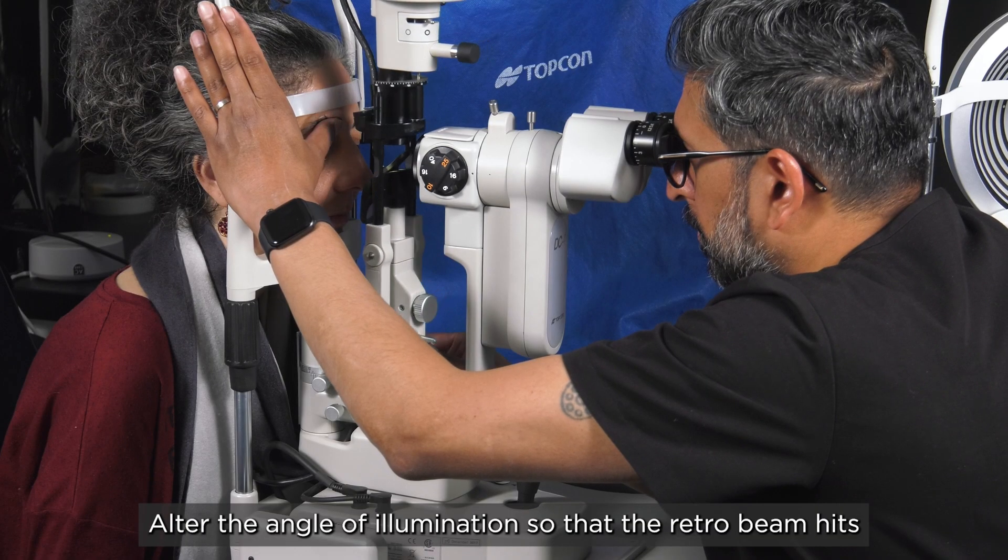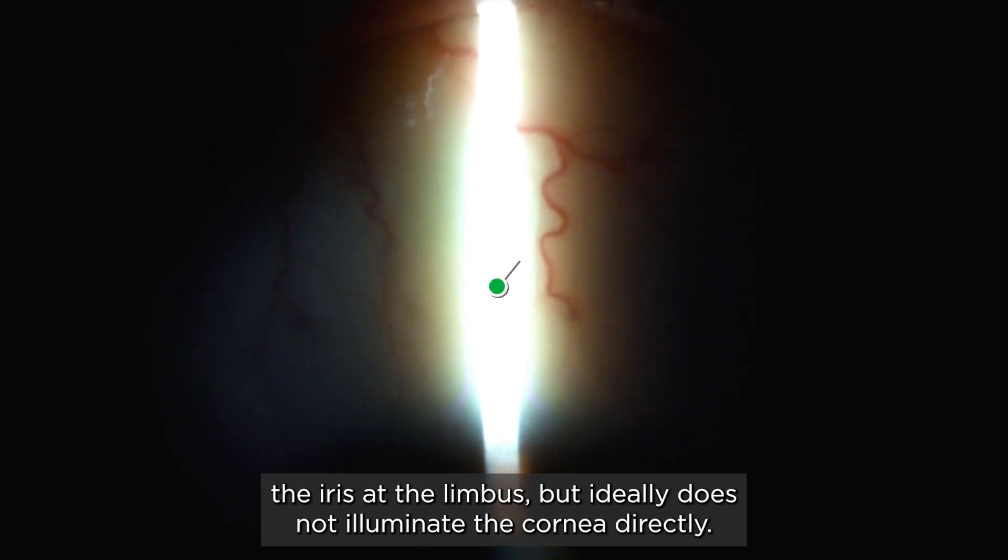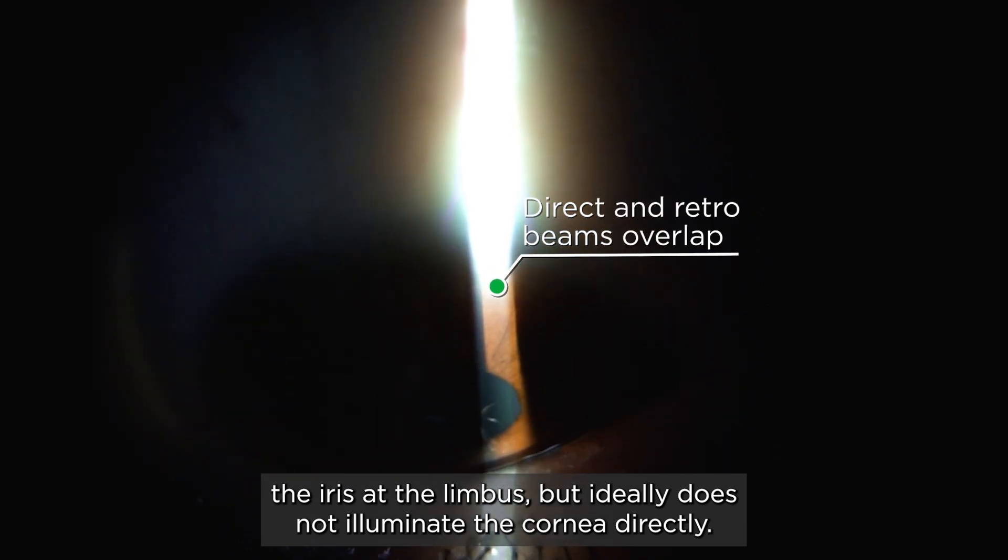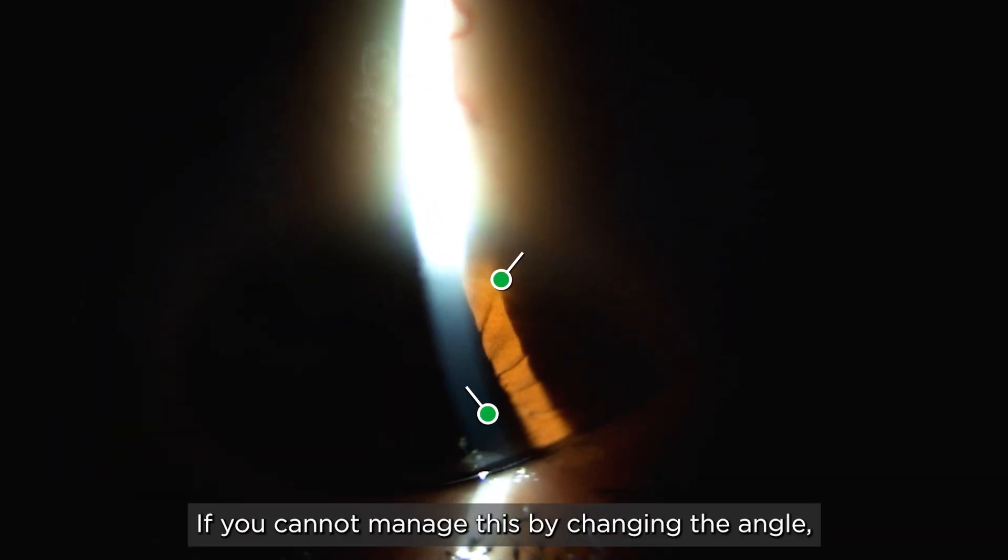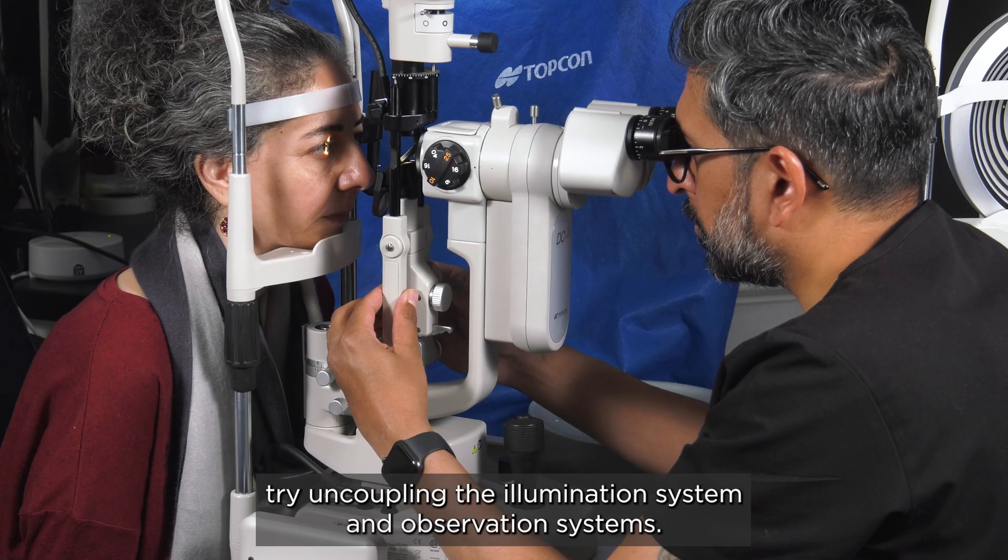Alter the angle of illumination so that the retro beam hits the iris at the limbus but ideally does not illuminate the cornea directly. If you cannot manage this by changing the angle try uncoupling the illumination system and observation systems.